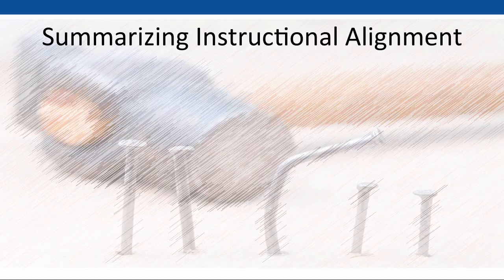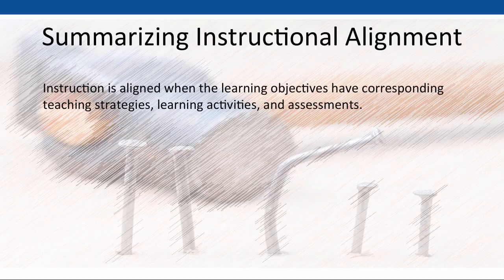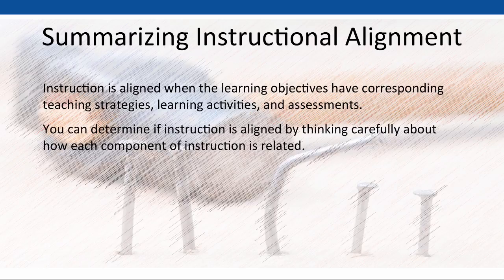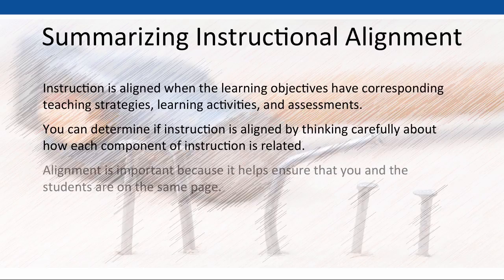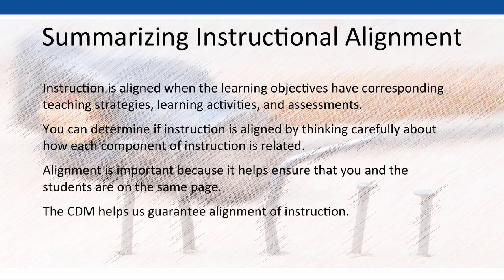Let's summarize what we've covered. Instruction is aligned when the learning objectives have corresponding teaching strategies, learning activities, and assessments. You can determine alignment by thinking carefully about how each component of instruction is related. Alignment is important because it helps ensure that you and your students are on the same page, and the CDM helps us guarantee alignment of instruction. Thanks for watching.